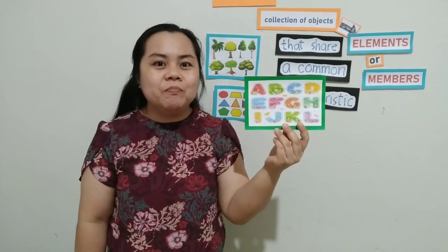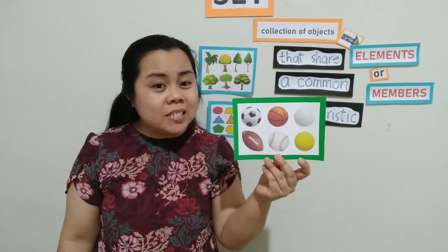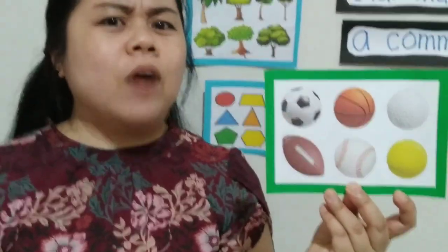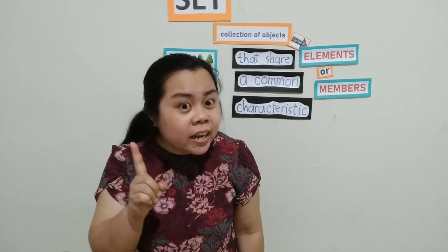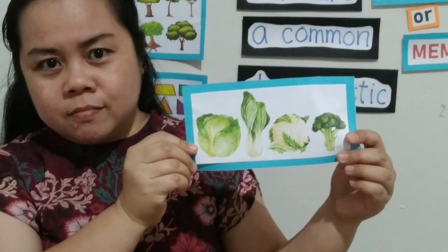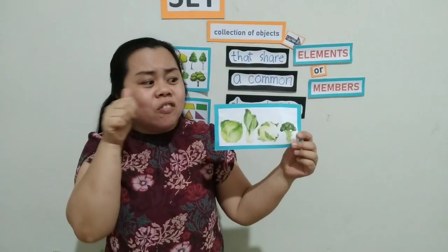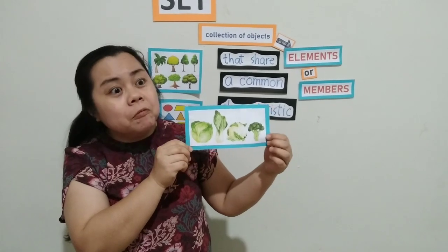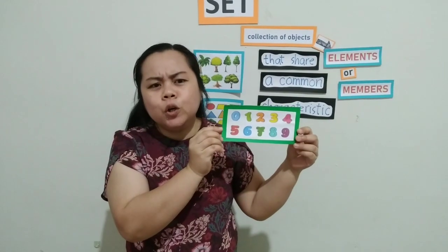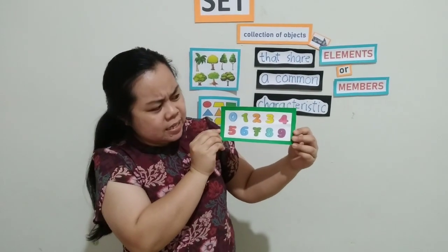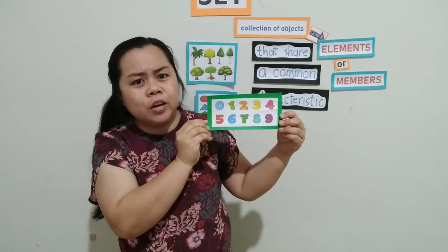How about this one? What set is this? Yes, you're right. This is a set of balls. Let's try another one — let's see if you get this. What is this? Yes, you're right. This is a set of vegetables. Good job. Let's try one more time. What set is this? Yes, you're so right. This is a set of numbers. Very good job, guys.